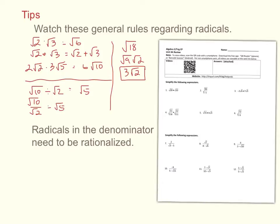Radicals in the denominator need to be rationalized. Taking root ten over root three: since ten can't be divided by three, you multiply top and bottom by root three. On top you get root ten times root three, which is root thirty. On the bottom, root three times root three is root nine, which equals three. That gets the radical out of the denominator.